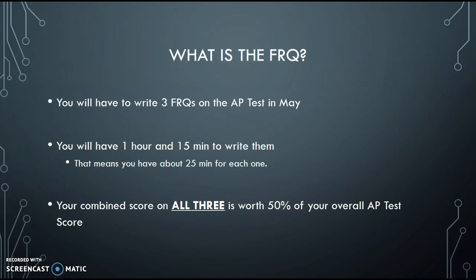So what are the FRQs? A few key points you need to know. Number one, there are going to be three of them on the AP Human Geography test in May. You'll have an hour and 15 minutes to write all three questions — about 25 minutes per question — and your combined score on all three is worth about 50 percent of your overall AP test score.